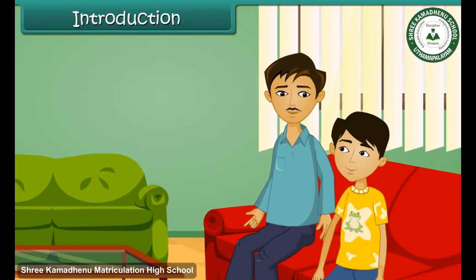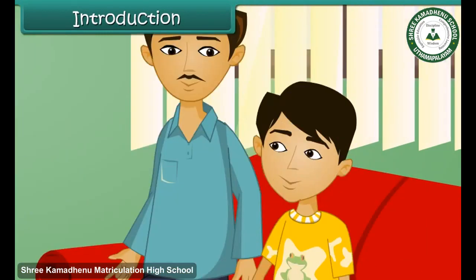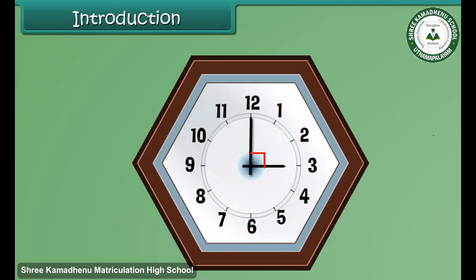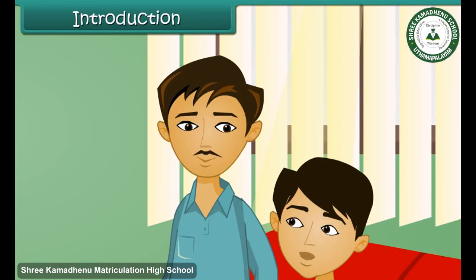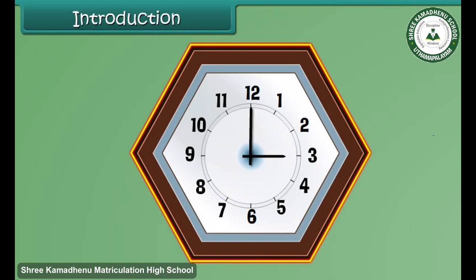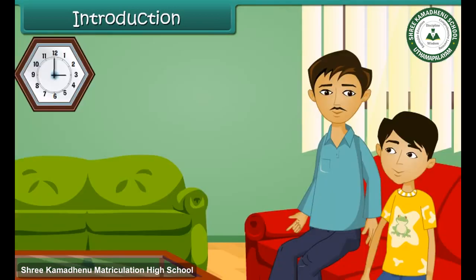Why are you looking at the clock, Vijay? I am trying to make out the angle made by the hands of the clock, uncle. They make a right angle, uncle. Great! Can you also comment on the shape of the clock, Vijay? Sure! The clock has six sides and it's a hexagon. Wonderful Vijay! You have learnt your geometry well.